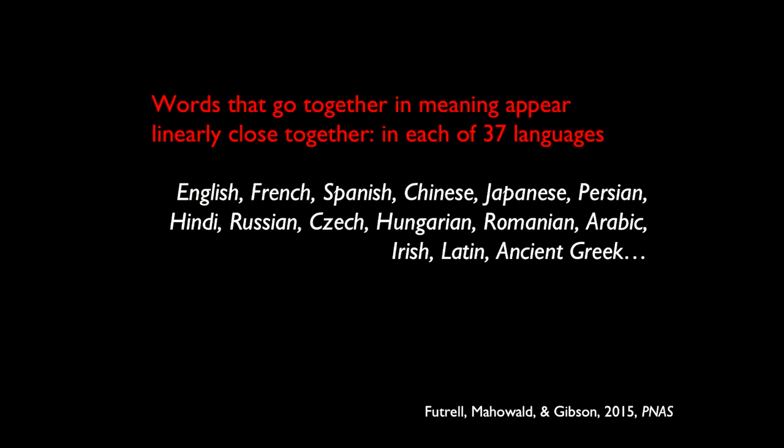What we observed was that languages tend to minimize the dependency distances between words in real texts compared to these baseline random-order texts. That was true in every single language — all 37: English, French, Spanish, Chinese, Japanese, Persian, even Latin and ancient Greek. Humans have a very strong bias in their language systems to put words that go together in meaning close together in the linear string.